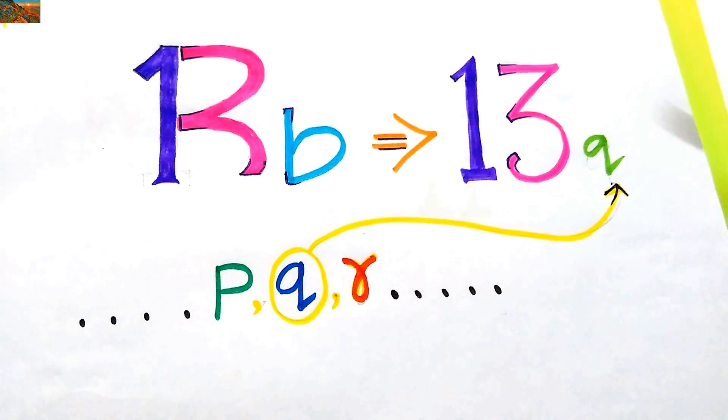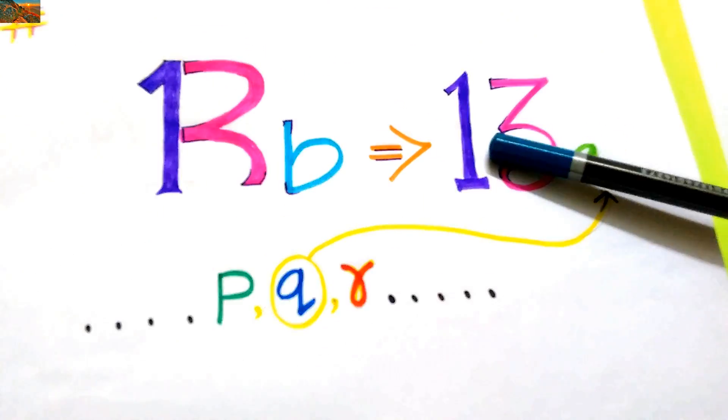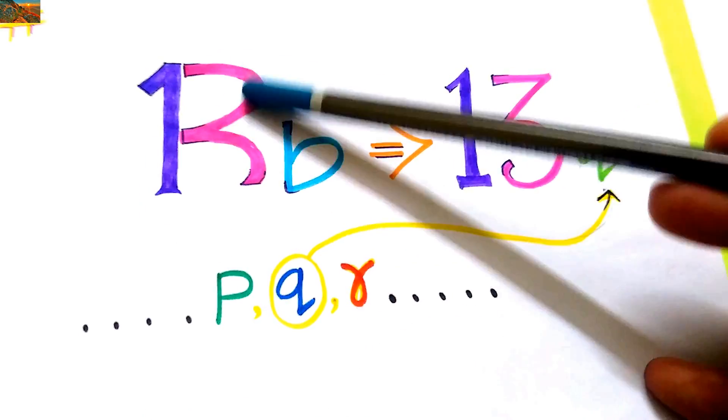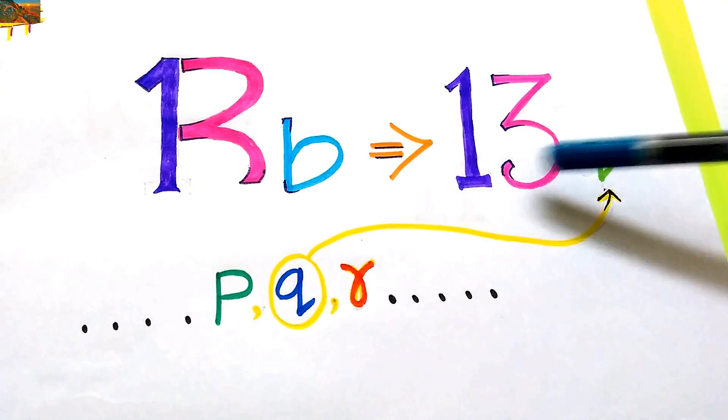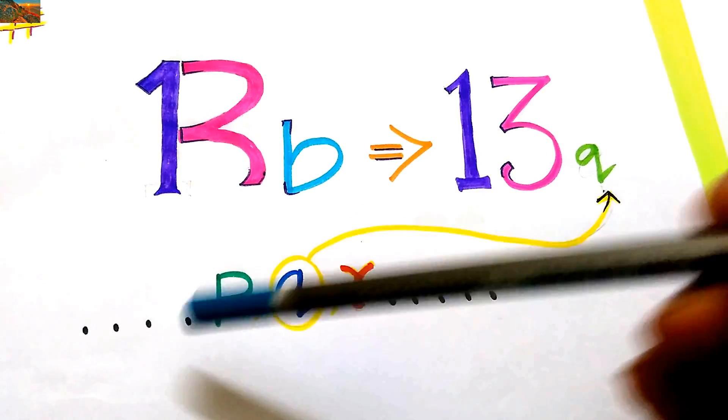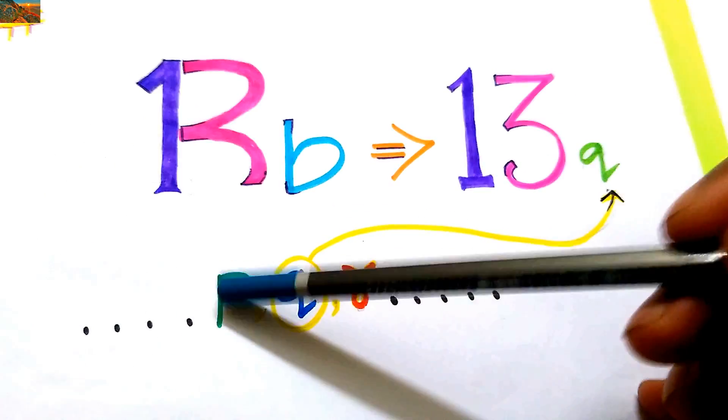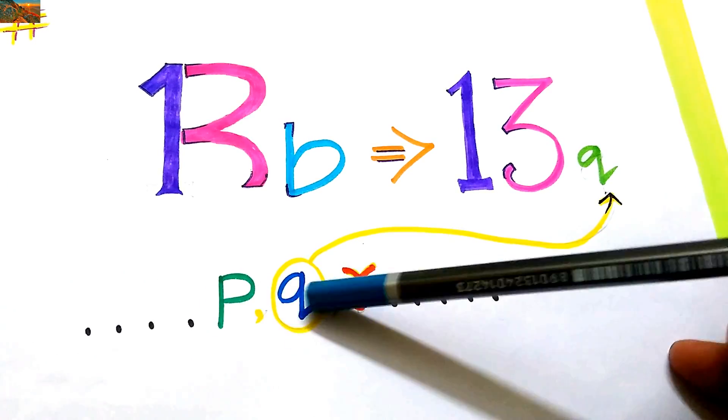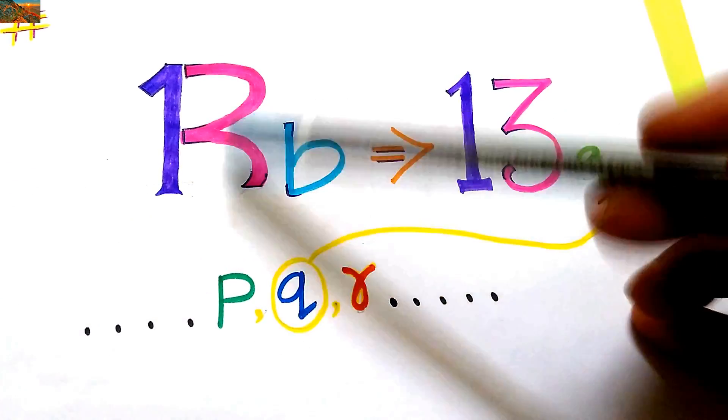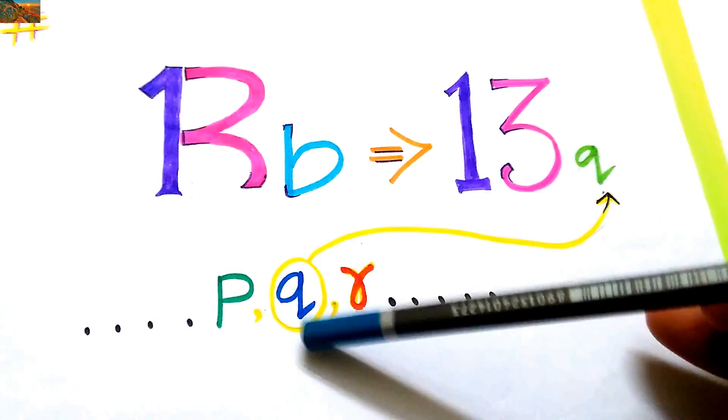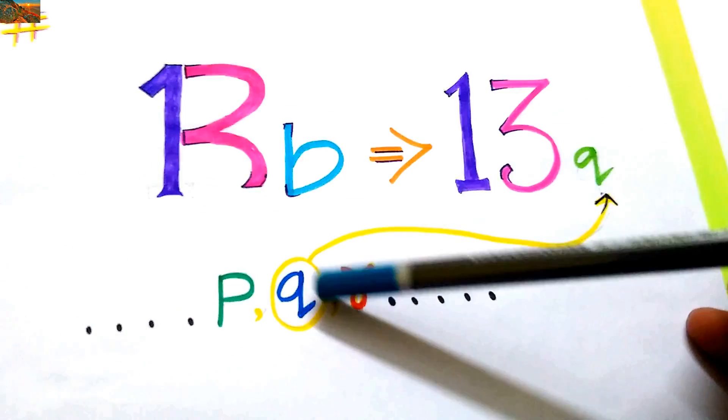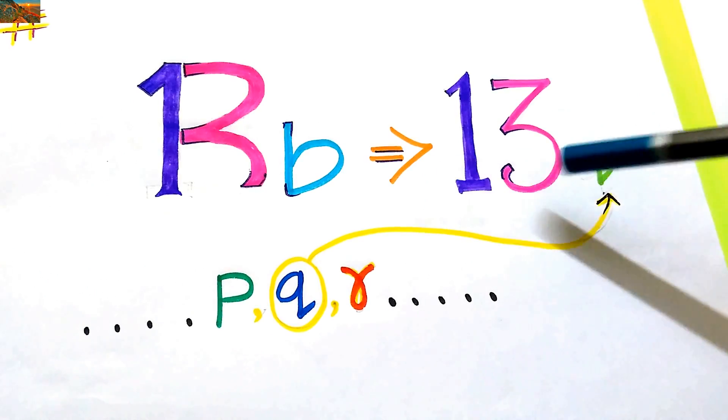The first gene is RB gene. From R we can find 1 and 3, so it is from chromosome 13. Q is from the alphabet PQR, the sequence is PQR. So Q is just close to R in the alphabet. So it is RB gene, Q is close to R, so it is 13Q.